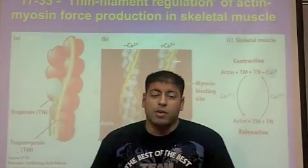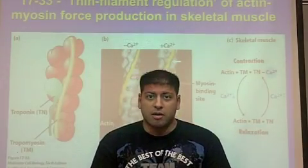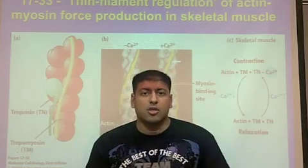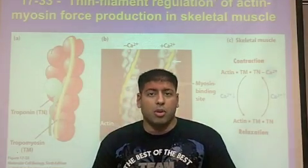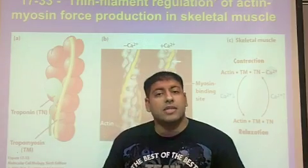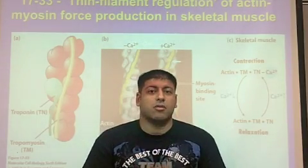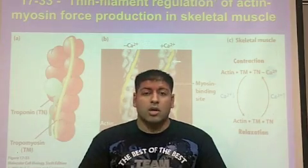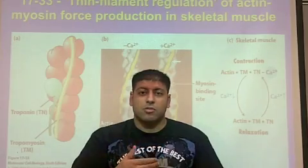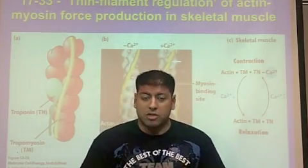Remember yesterday we were talking about the myosin crossbridge cycle. Myosin is a plus-end directed motor protein that binds and interacts directly with actin, causing the crossbridge cycle — where myosin walks along actin causing force to be produced, leading to muscle contraction.